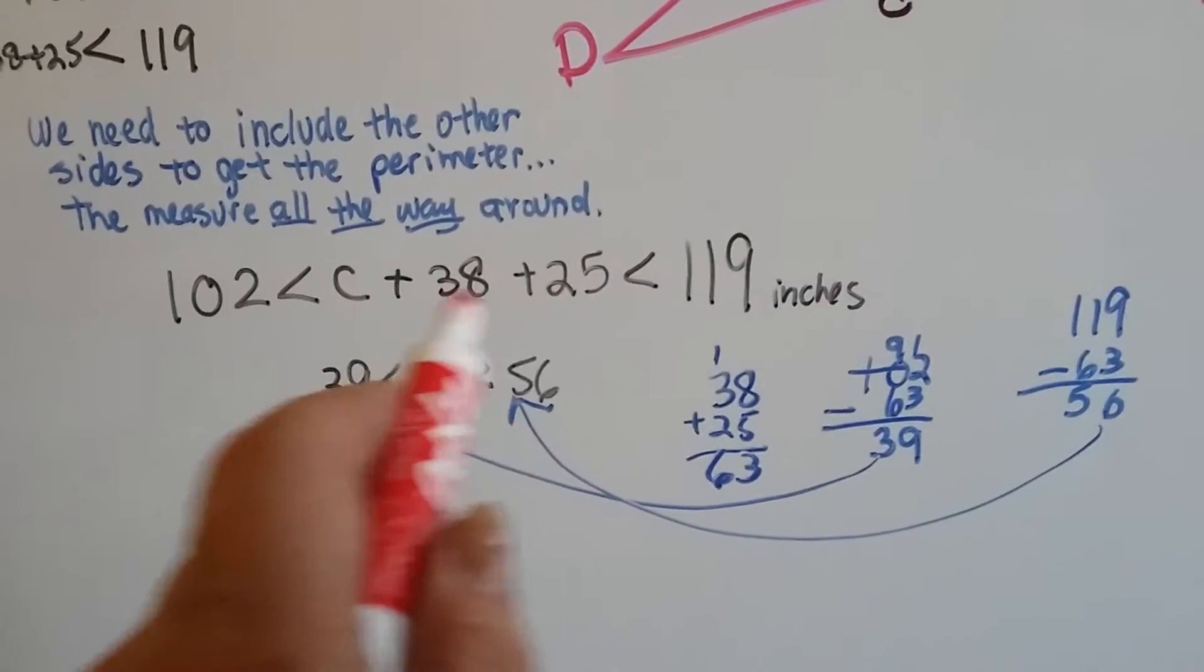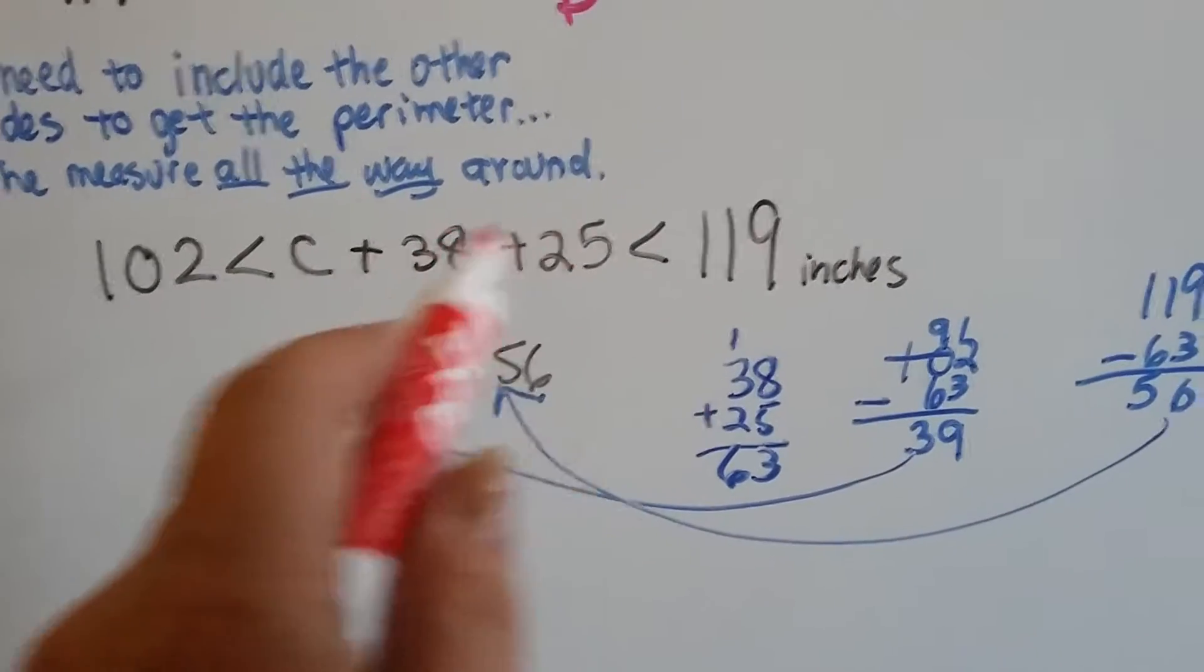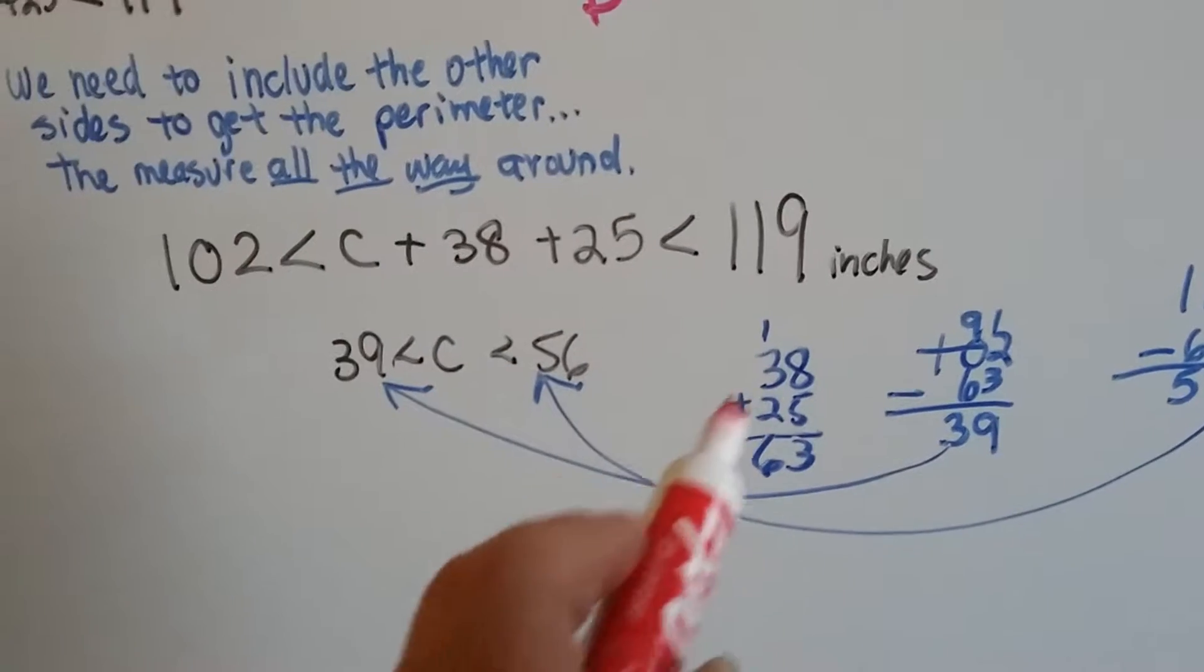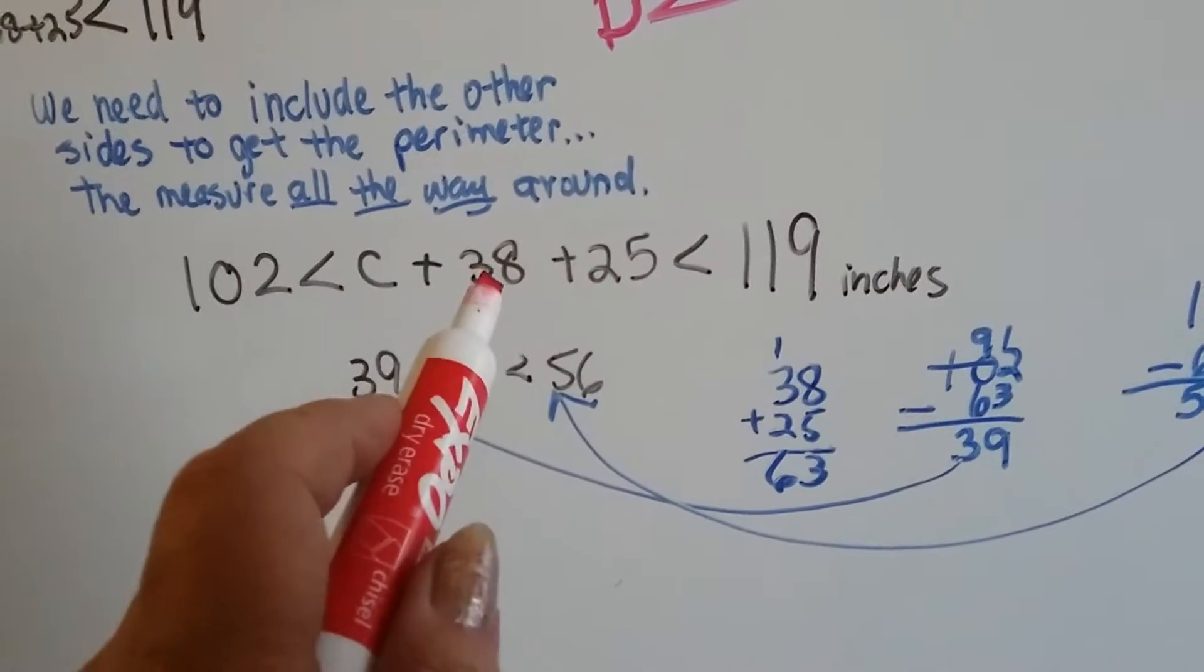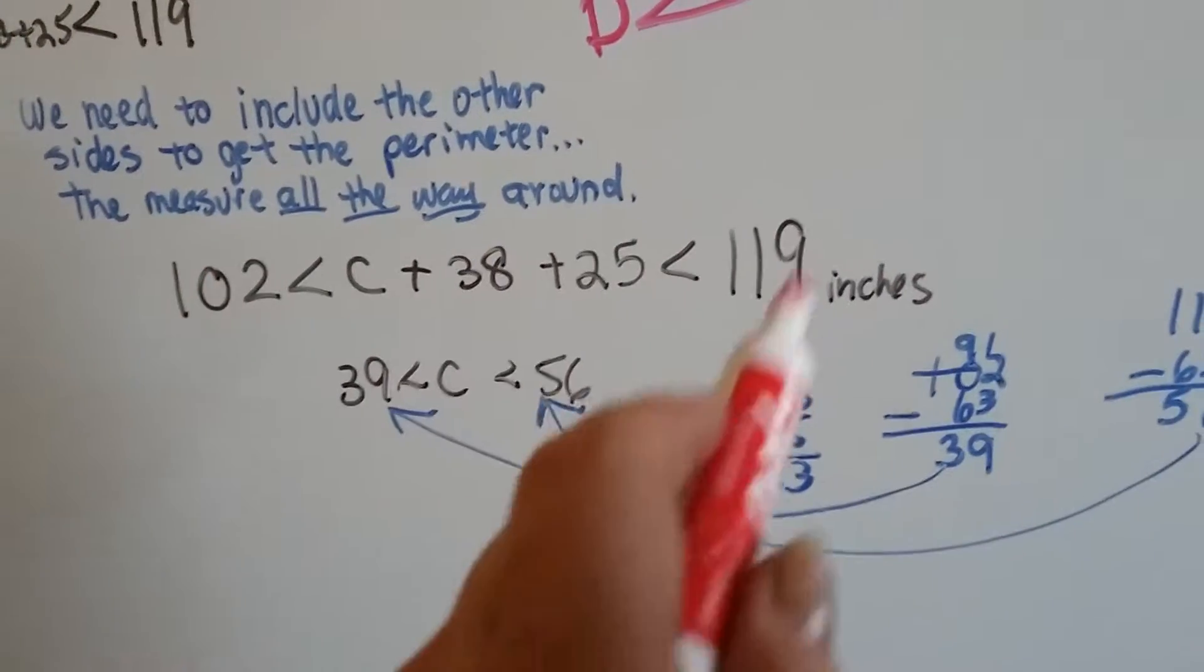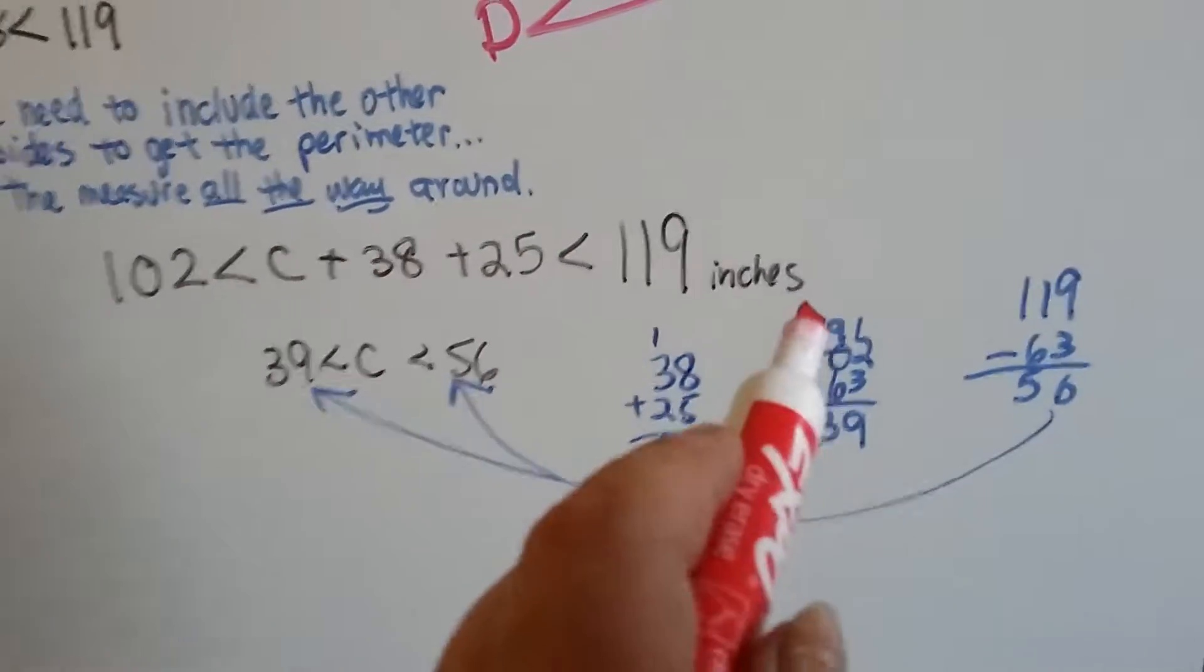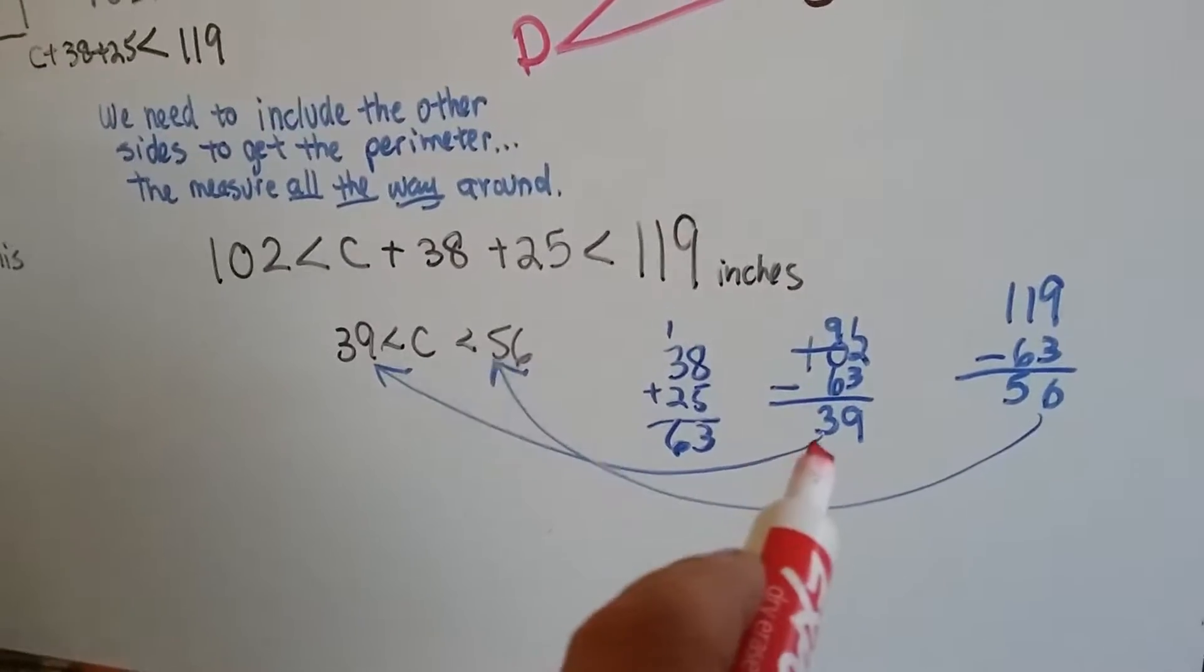Now let's add these two guys together so that we can get somewhere with our numbers. 38 plus 25 is 63, but that doesn't help us. We still need to take them away from 102 and 119. 102 minus 63 is 39.